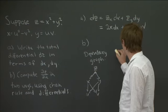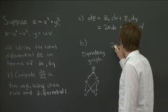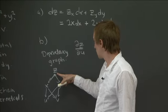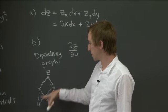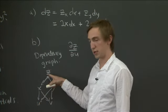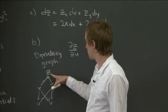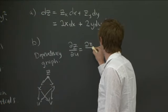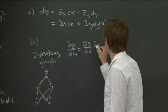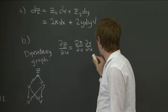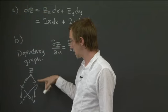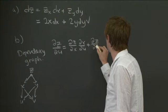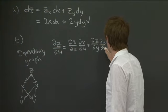So now, what the chain rule says is that if we take a partial derivative ∂z/∂u, we have to go through our dependency graph. Every way that we can get from z to u, we get a term in our summation for each one of those. So for instance, z goes to x goes to u. So that means that we have ∂z/∂x times ∂x/∂u. And then we can also go z goes to y goes to u. And that will give us ∂z/∂y times ∂y/∂u.